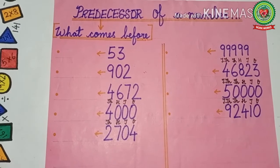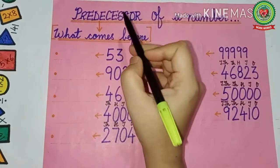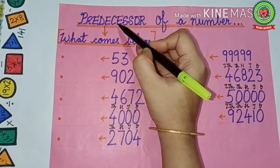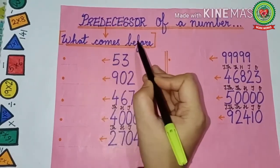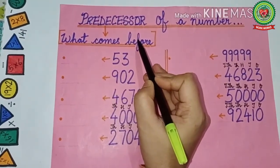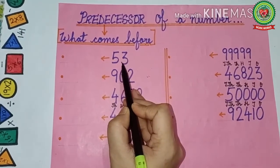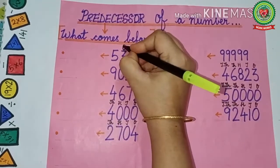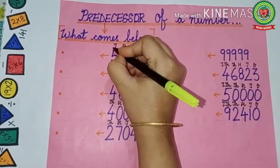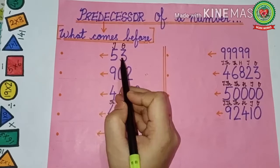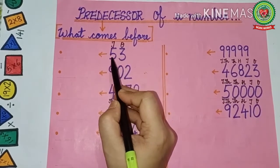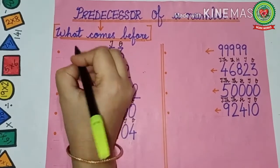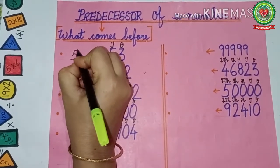Kids, let us take some examples now. See the predecessor of a number — what comes before? We have to write what comes before 53. Always write the place value table first: ones and tens. You know your counting very well, so you know that what comes before 53 is 52. So, we will write 52.